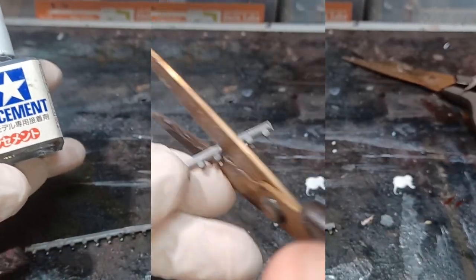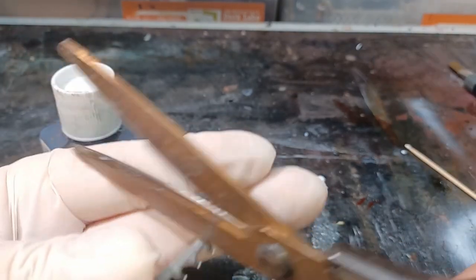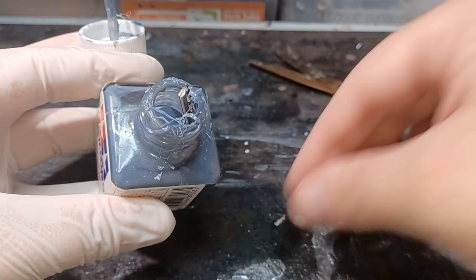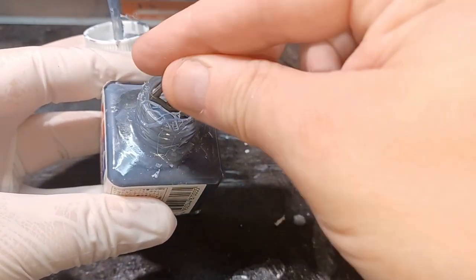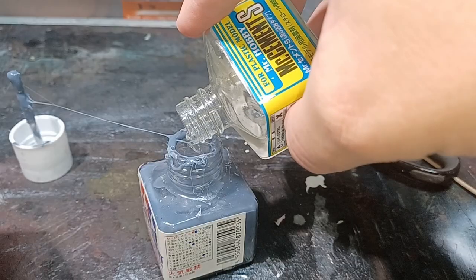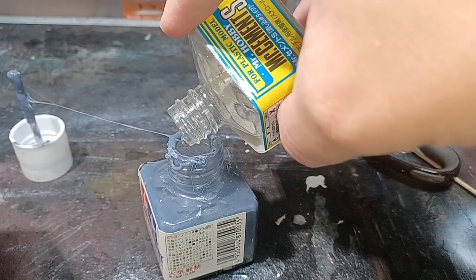So I need to make some sprue goo. The first thing to do is cut down some sprue with some scissors, placing it into the plastic cement. When first doing this, you're gonna have to add a lot of sprue. I made this sprue goo about six months ago, so it's dried out a little bit. So to fix it up, I just top it up with a bit more cement, a few more bits of sprue.